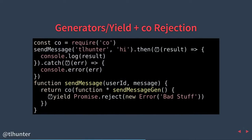Looking at rejection with co: within our co call wrapping this generator, if we yield a promise which is rejected, we will catch that within our original promise call. Our sendMessage's dot-then is not called, but our catch is.